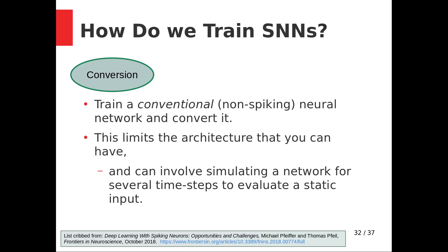Conversion is one of the least interesting proposals. It's basically training a normal non-spiking neural network and then converting it — mapping those neurons onto spiking neurons and those weights onto synapse weights. This can actually work fairly effectively for a lot of problems, which might be interesting philosophically. But it limits the kinds of architectures you can have. One potential strength of spiking neural networks is that they can have very complicated connection patterns, and conversion loses a lot of that.